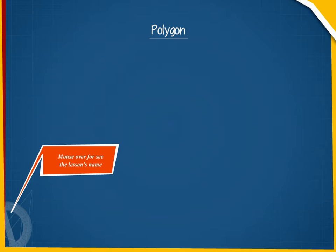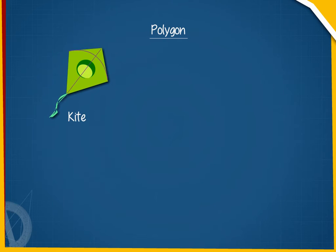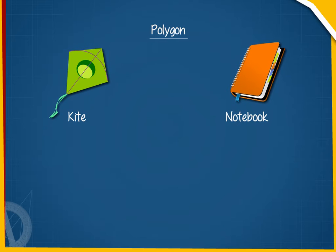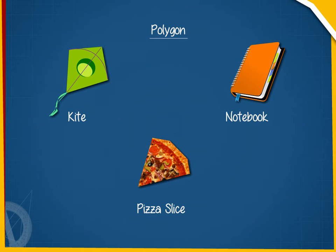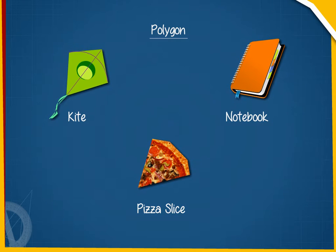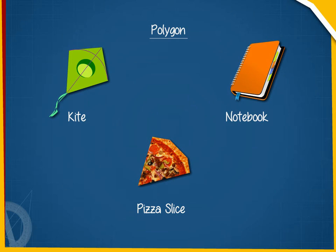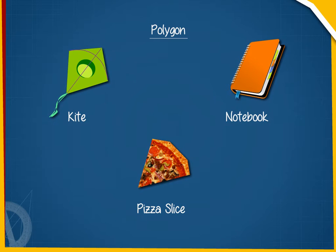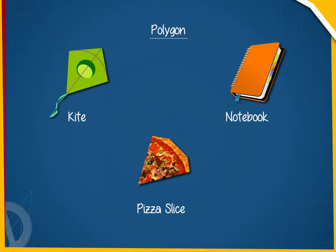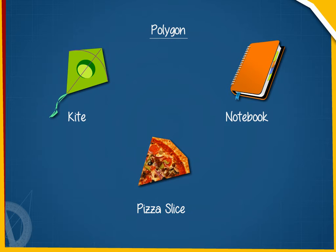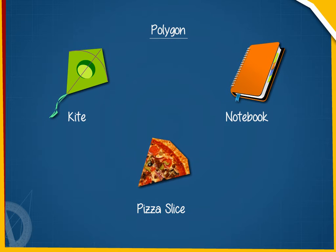Polygon. Consider a few objects: a guide, a notebook, and a pizza slice. These objects are closed curves or figures made up of only line segments. A polygon is a closed shape formed with line segments.